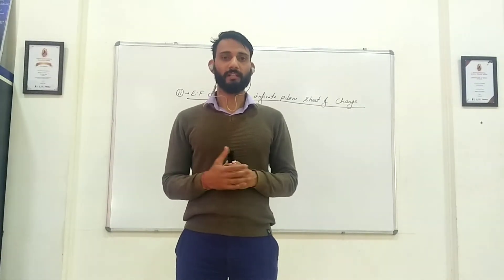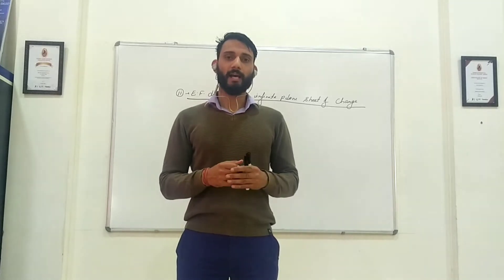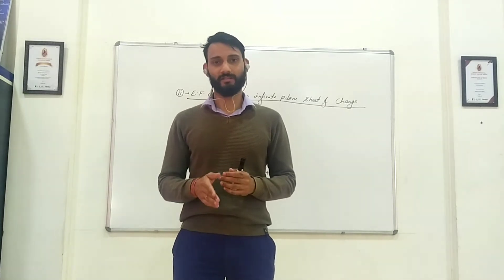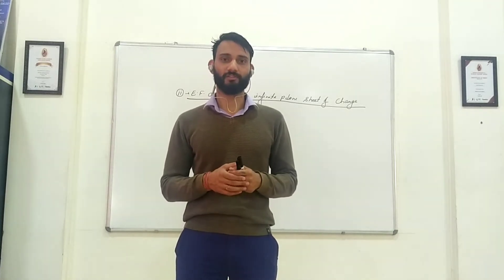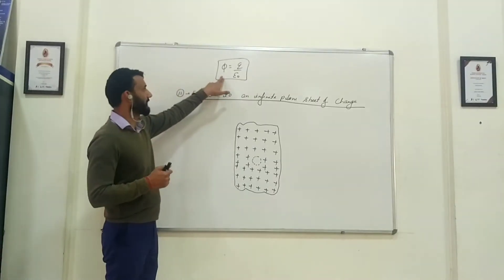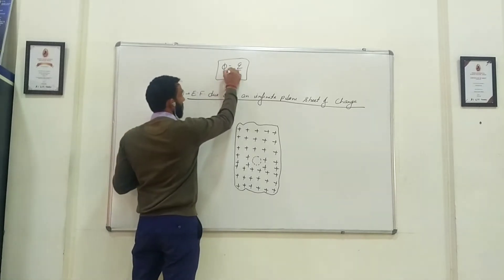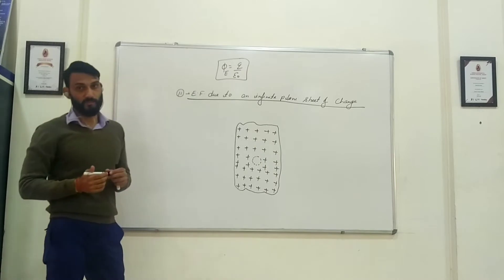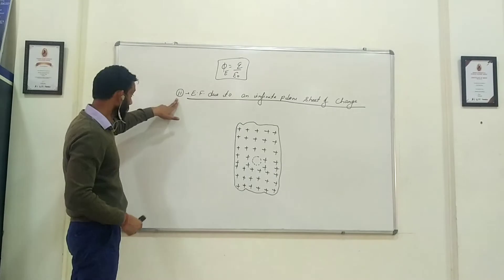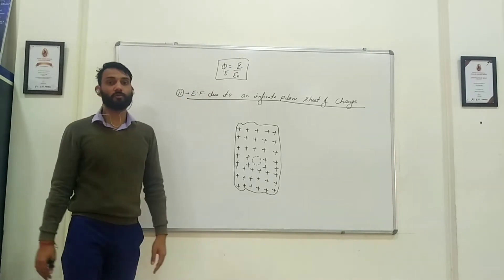Welcome to the class. We continue with our discussion on Gauss's theorem. In the previous class we discussed Gauss's theorem, its derivation and its application to calculate the electric field due to an infinitely long straight conductor. The expression for Gauss's theorem is: electric flux equals Q upon epsilon naught, where Q is the total charge enclosed by the surface and epsilon naught is the permittivity of free space.